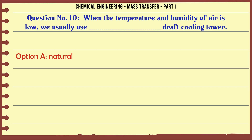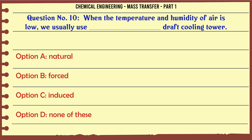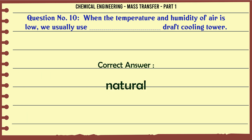When the temperature and humidity of air is low, we usually use [which type of] draft cooling tower? A. Natural. B. Forced. C. Induced. D. None of these. The correct answer is Natural.